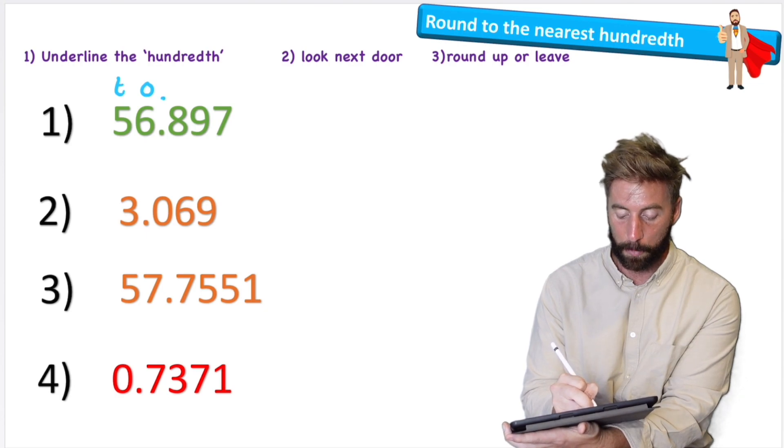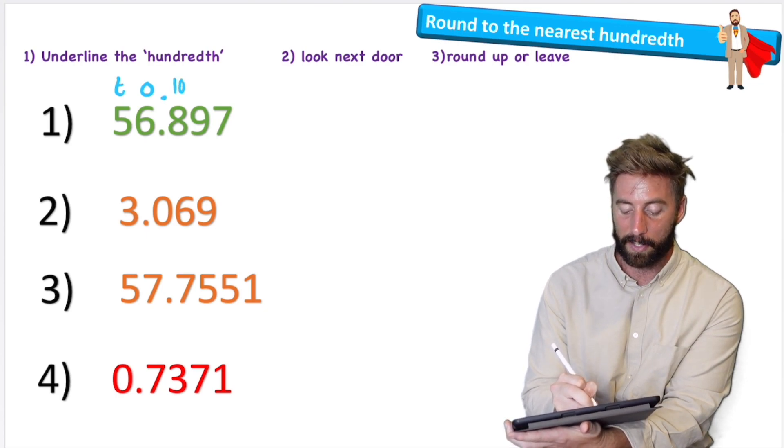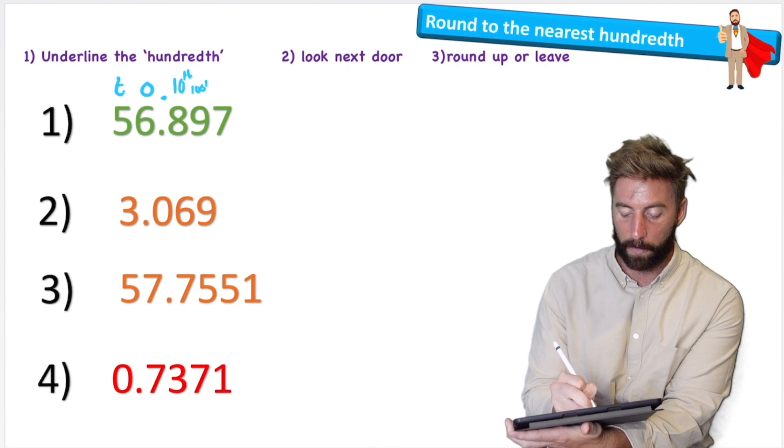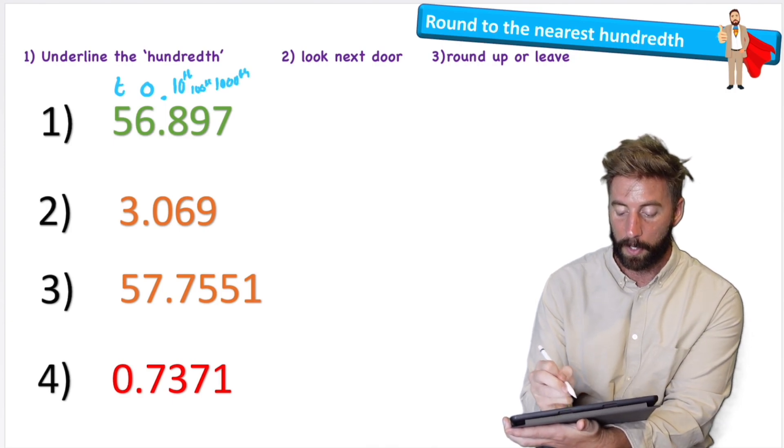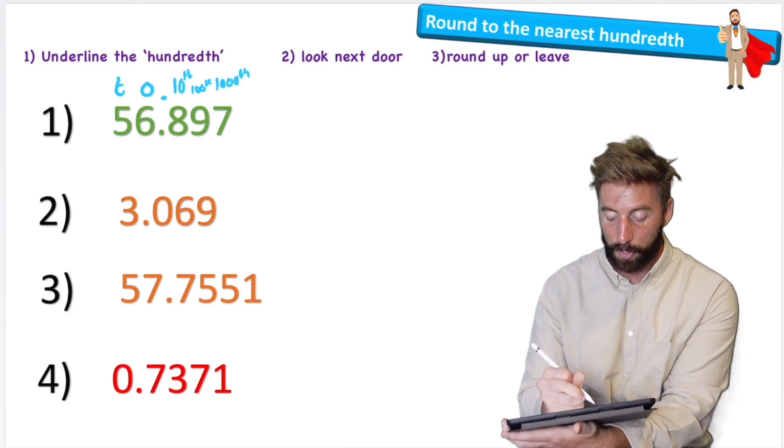And I'm going to put back my decimal. The eight is in the tenths column, the nine is in the hundredths column, and the seven is in the thousandths column. So we're rounding to the nearest hundredths, which will be this column just here where the nine is.